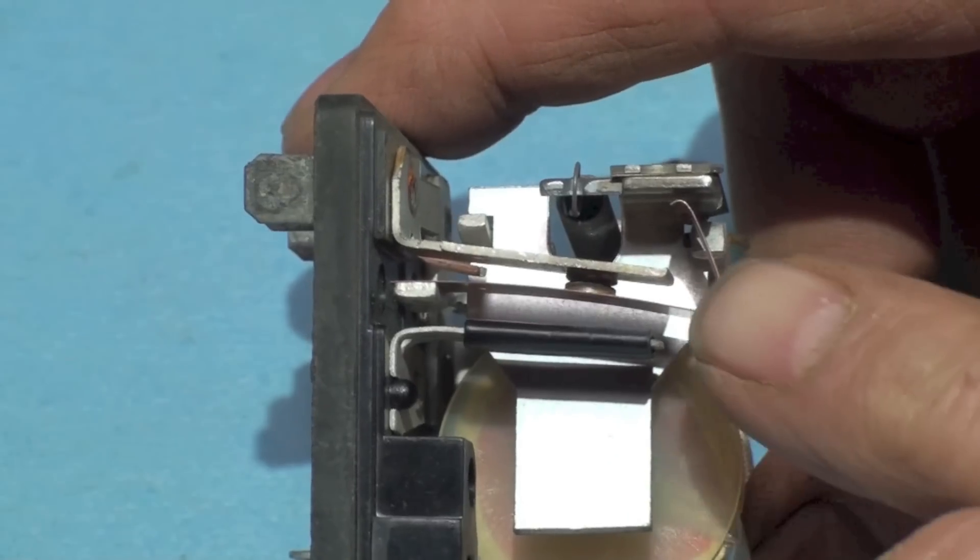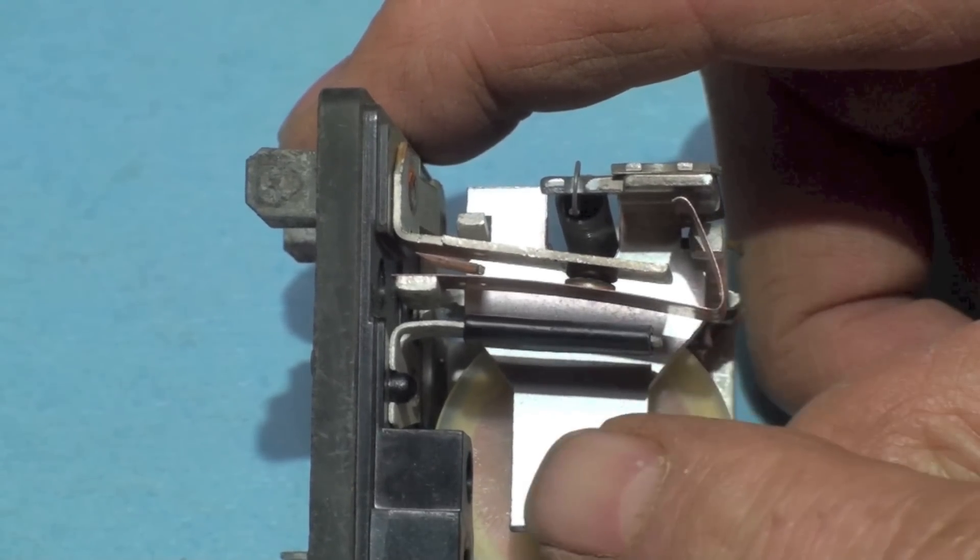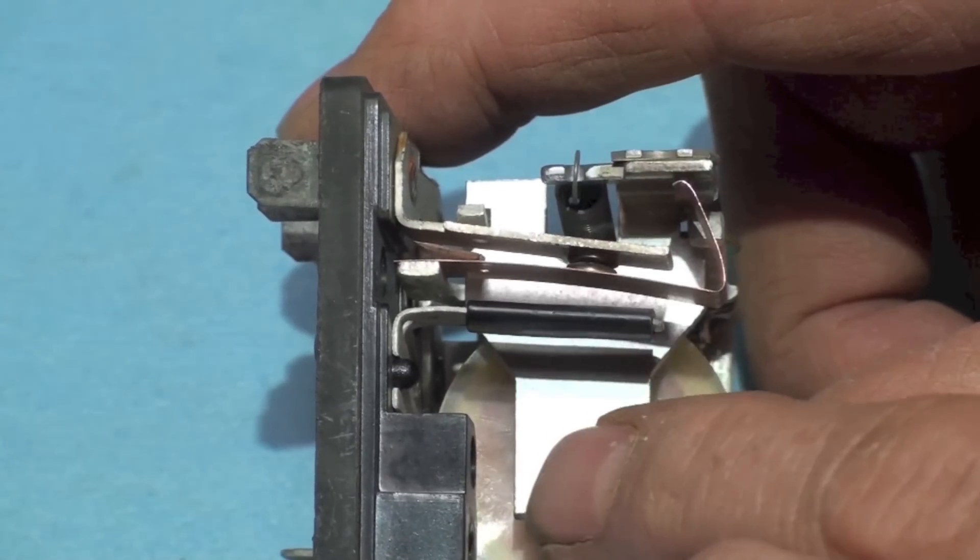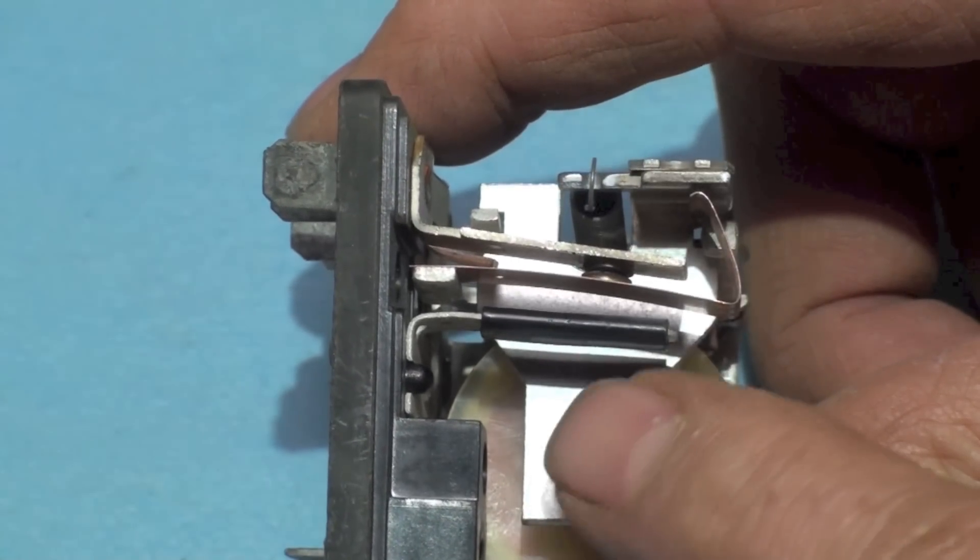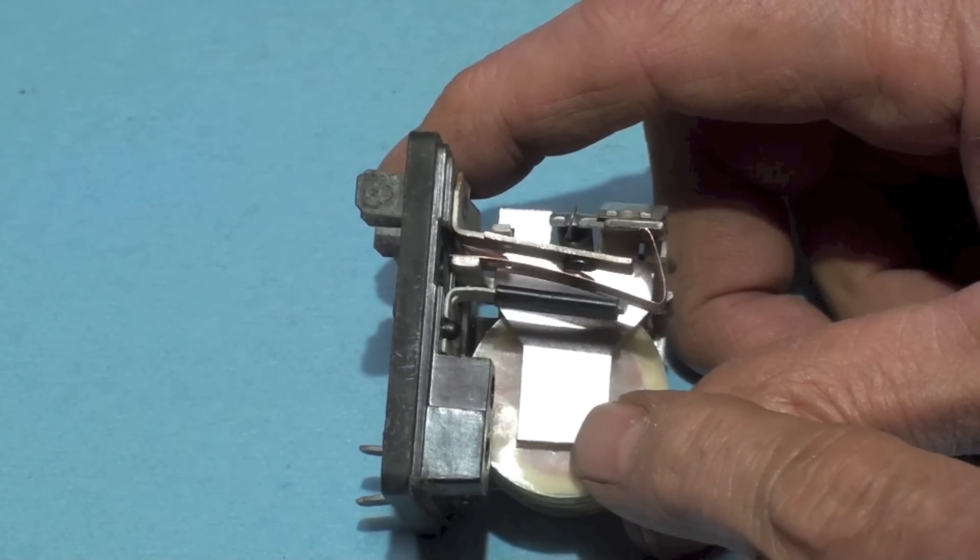Now when this energizes, this little armature here is going to come down and opens up the contacts. Very simple, not much to this little bugger. Now the coil on this is kind of interesting because it's designed to use high voltage.